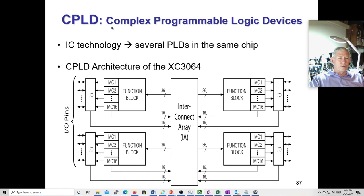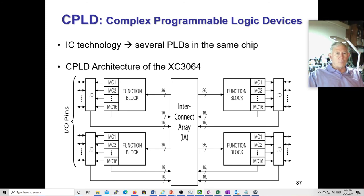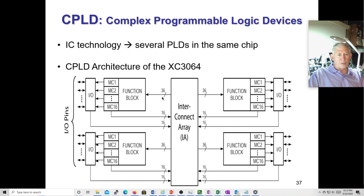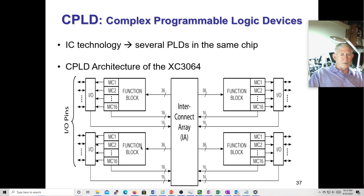Here's a CPLD — these are still used and you can still buy them. Xilinx makes some; this is an XC3064. You have function blocks, each with 16 macro cells. These have quite a lot of functionality — lookup tables and programmable logic. Then you have this big interconnect matrix: 36 lines going to each function block, 16 lines coming out of your macro cells, 16 lines coming out of your IO matrix, and then external pins on the other side.